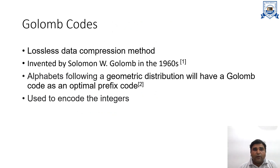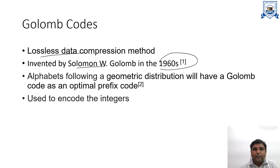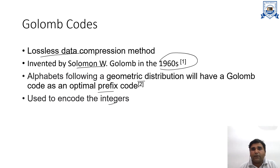Before starting the Golomb code, we just look at some key points. Golomb codes come under the lossless data compression method. This method was invented by Solomon W. Golomb in the 1960s. The alphabets follow a geometric distribution, giving us a Golomb code as an optimal prefix code. These codes are used to encode integers, and are highly suitable for situations where the occurrence of small values in the input string is significantly more likely than large values.